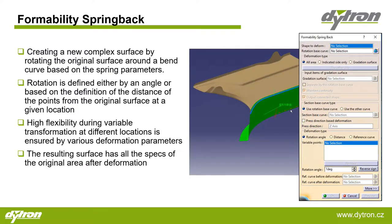The first presented functionality from the Formability Shaper module is the Springback feature, which helps users to define the cushioning of specific surfaces of a sheet by creating a new complex surface that is rotated around the original one, around a bend curve, based on different specific parameters. The rotation itself is defined either by an angle or by a distance parameter, or it could also be defined around a reference curve. This provides high flexibility during variable transformation at different locations. The resulting surface has all of the properties of the original area after the deformation.